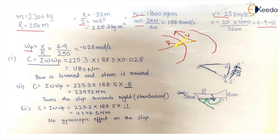For the second case — pitching — the bow rises at an angular velocity of 0.8 radian per second. The angular velocity of precession is now given directly, so the reactive gyroscopic couple changes accordingly while I·ω remains the same. When the bow is rising, the direction of the reactive gyroscopic couple is counterclockwise. When it is counterclockwise, the ship tends to turn towards the left — towards the port side when viewed from the top.